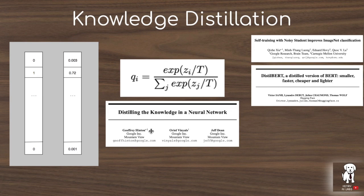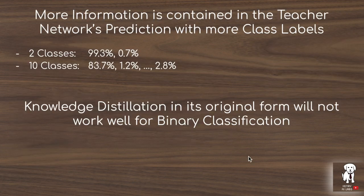Introduced in the paper 'Distilling the Knowledge in a Neural Network' by Jeff Hinton, Oriol Vinyals, and Jeff Dean, the idea behind adding a temperature parameter to the logits before the softmax is to smoothen out the distribution and provide more learning signal on the classes with really small probabilities.